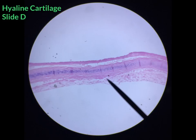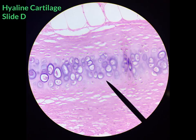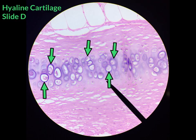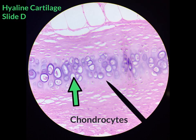Under low power, what you see here is hyaline cartilage. You can find hyaline cartilage on slide D. Taking a closer look under low power, you can see that hyaline cartilage is made up of cartilage cells called chondrocytes, which are shown in purple here.